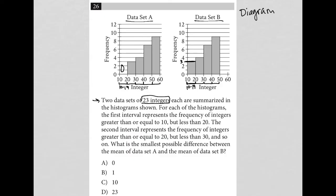What is the smallest possible difference between the mean of data set A and the mean of data set B? All right, so first of all, what is the difference between how these data sets are even set up? It looks like data set B looks a lot like data set A, but it's just been shifted to the left by one space.